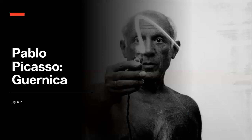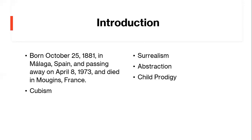We're going to start off with a little introduction. Right here you can see a picture of him doing a light artistic thing. Pablo Picasso is, as you all know, one of the most influential and celebrated artists of the 20th century, renowned for his groundbreaking contributions to the world of art. He was born on October 25th, 1881 in Malaga, Spain, and passed away on April 8th, 1973 in Mougins, France. Picasso's life and work are closely intertwined with the dynamic cultural and historical currents of his time.